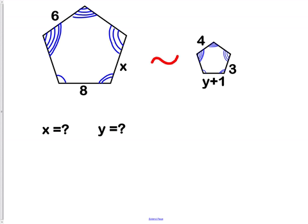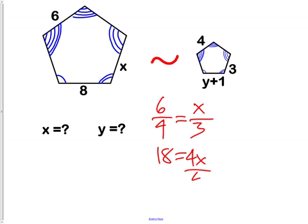Let's do x first. Remember, our scale factor was 6 to 4. Now if we choose the x side of the triangle, that happens to be between the 3 congruency marks and the 2. We have to find the same spot on the other picture. Between the 3 and the 2 is the 3. Now cross multiply and solve. We get 18 equals 4x. Divide by 4. Divide by 4. And x equals 9 over 2. 9 halves.